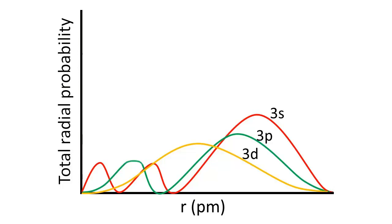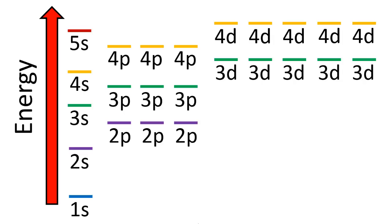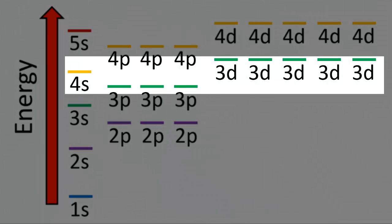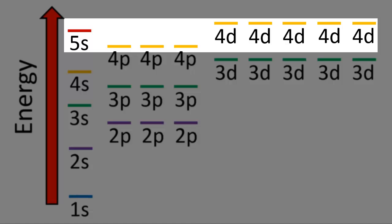We can see similar results looking at the radial distribution functions for the 3s, 3p, and 3d orbitals. The s orbitals penetrate more than the p orbitals, which penetrate more than the d orbitals, so from lowest to highest energy in the third principal shell: 3s, then 3p, then 3d. This figure shows the general energy ordering for orbitals in multi-electron atoms. Because of penetration, sublevels within a given principal shell are not degenerate. Notably, in the fourth and fifth principal shells, penetration becomes so important that the 4s orbital is lower in energy than the 3d orbitals, and the 5s orbital is lower in energy than the 4d orbitals.